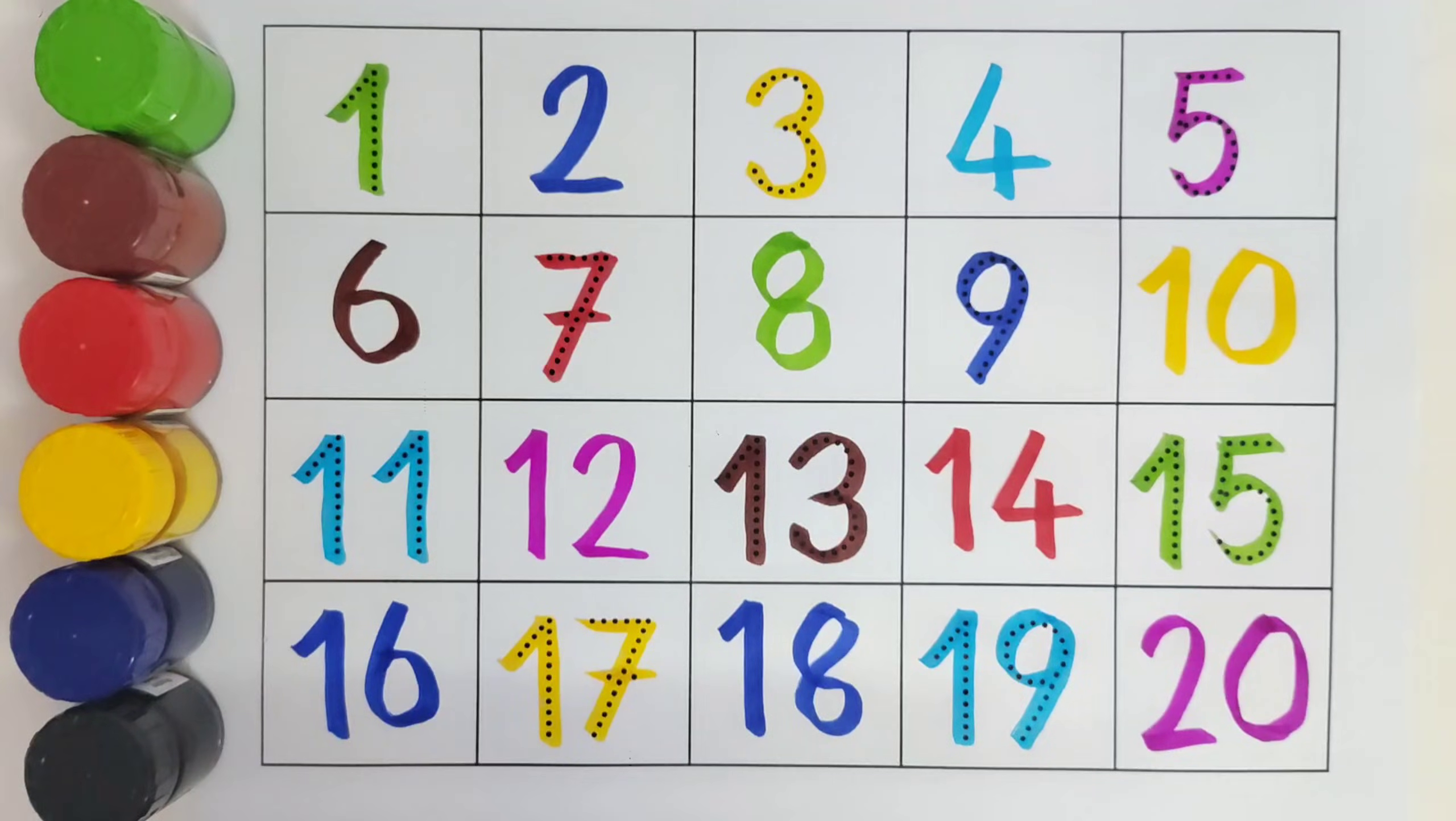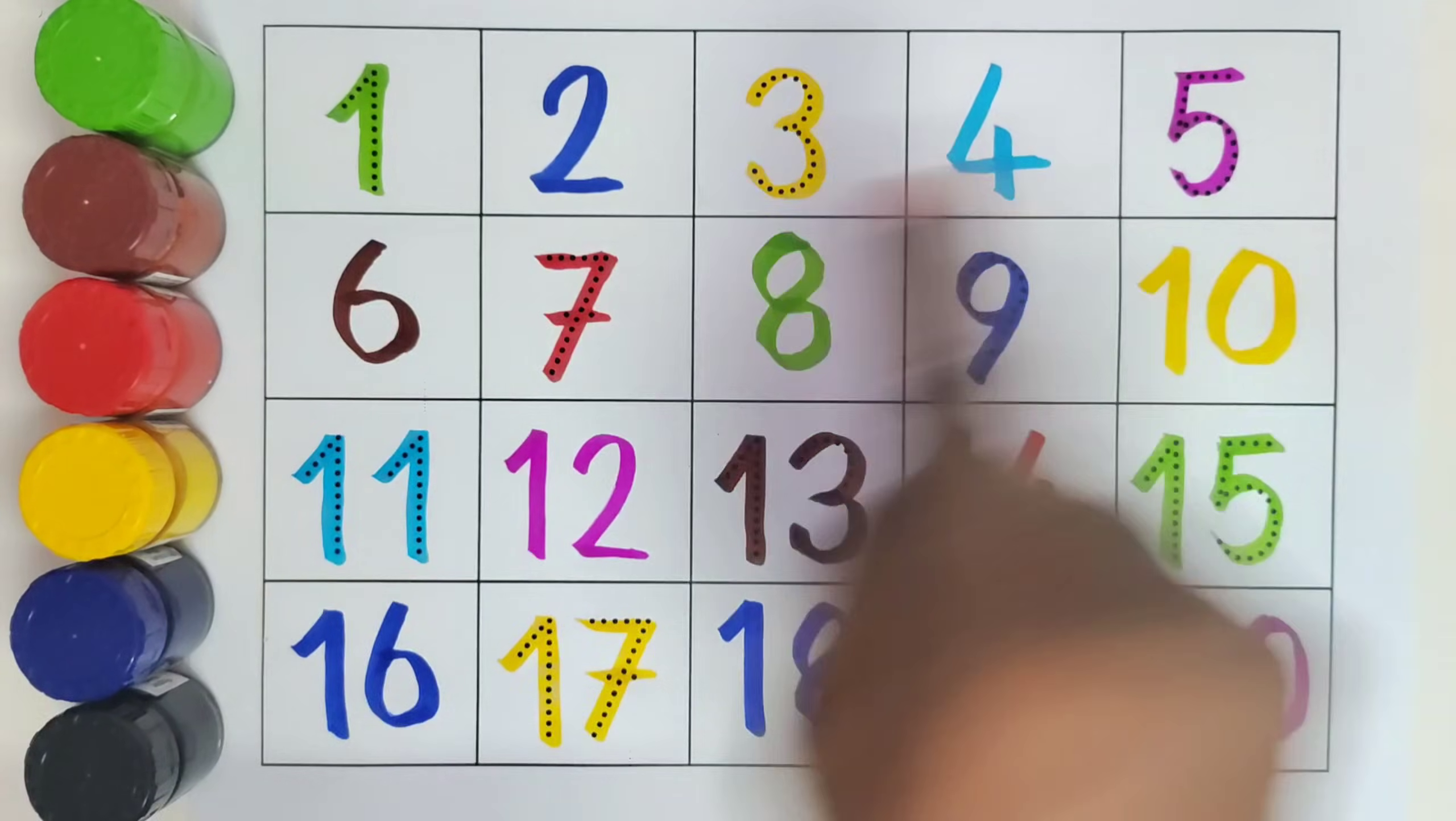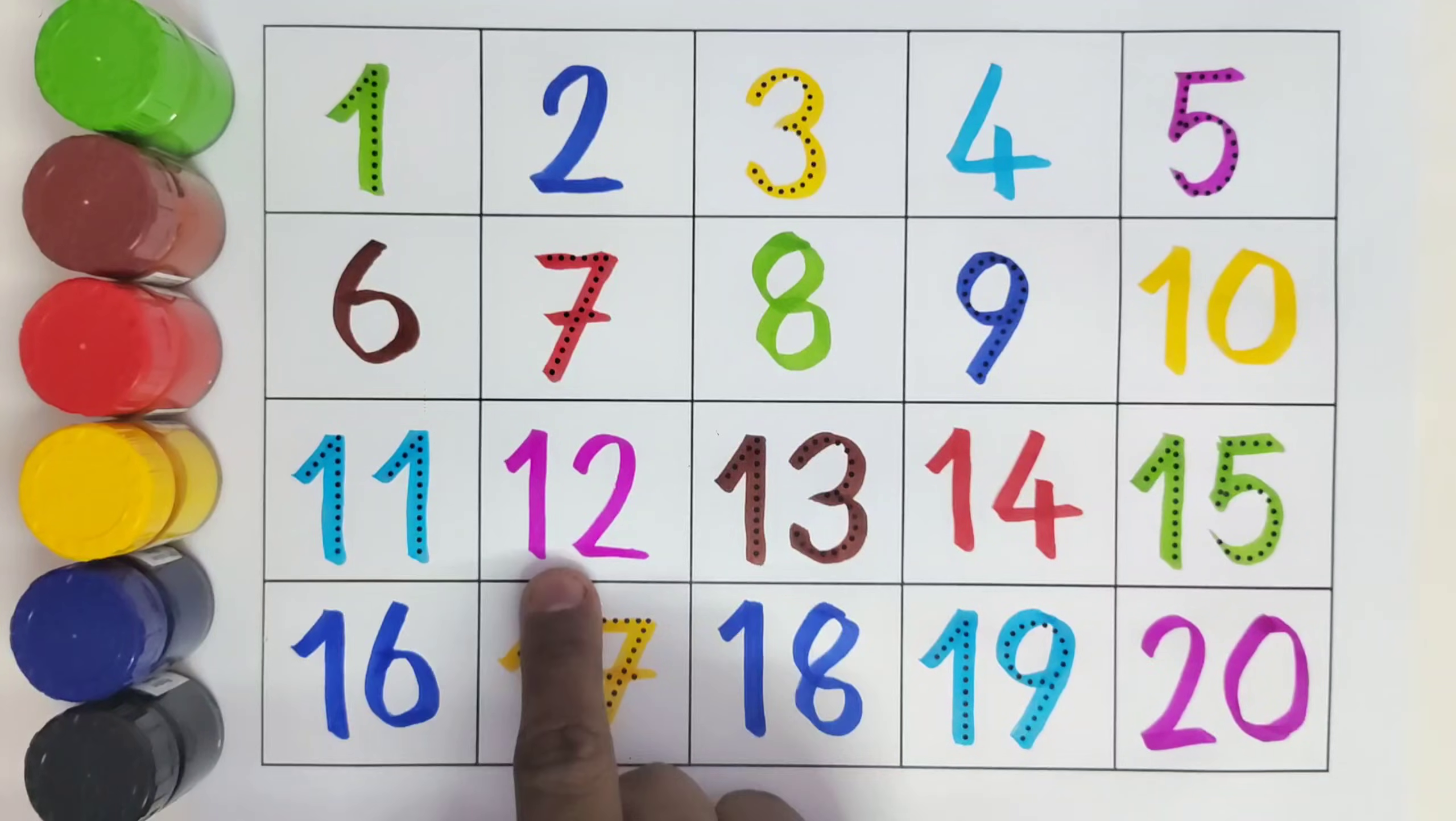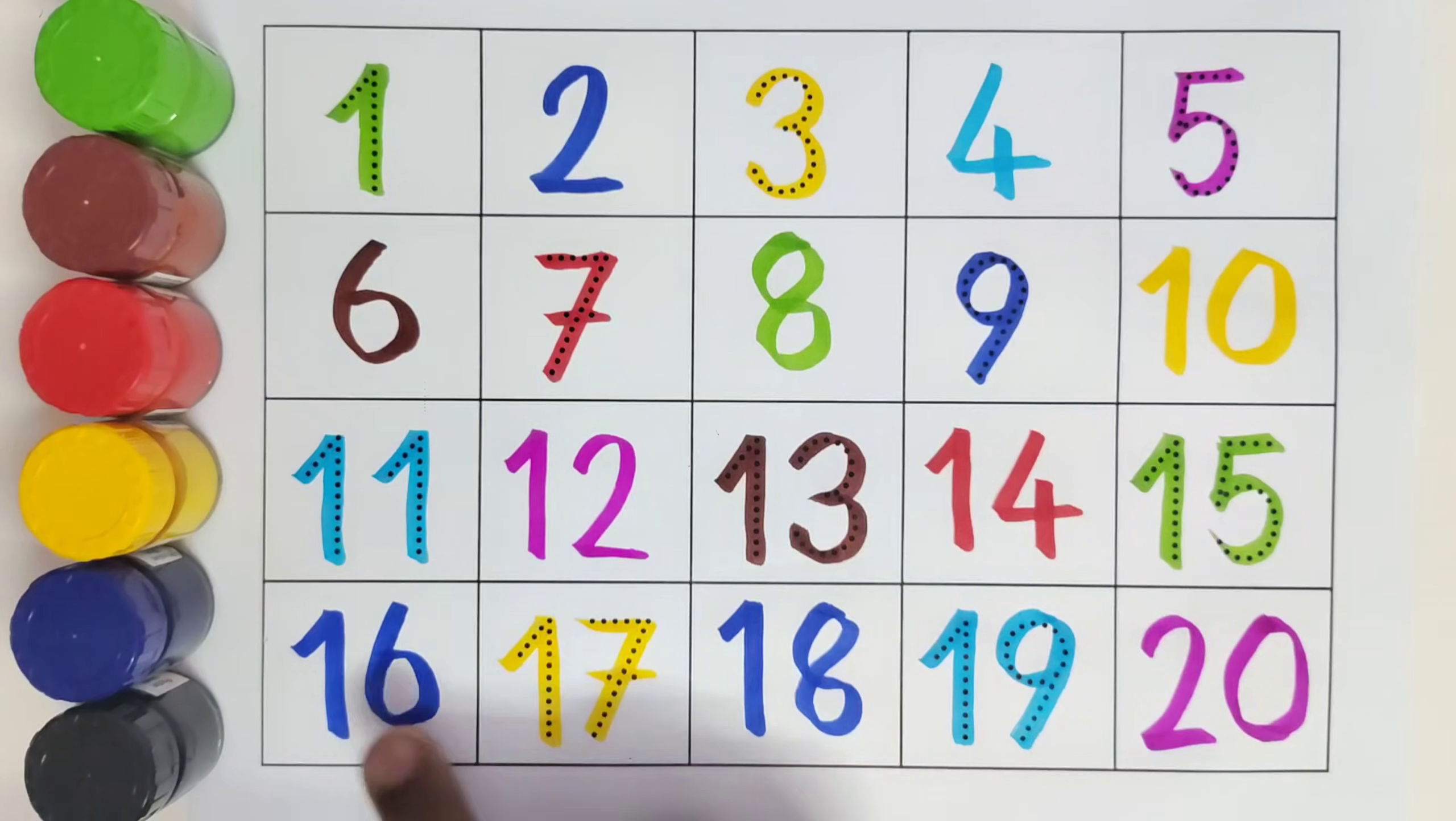Let us read them one by one. 1, 2, 3, 4, 5, 6, 7, 8, 9, 10, 11, 12, 13, 14, 15, 16, 17, 18, 19, 20.